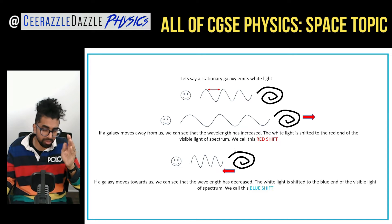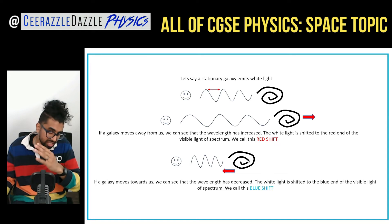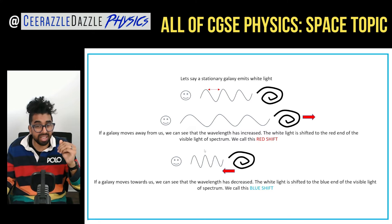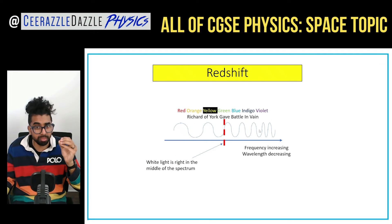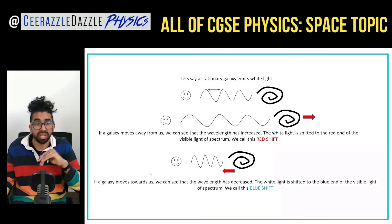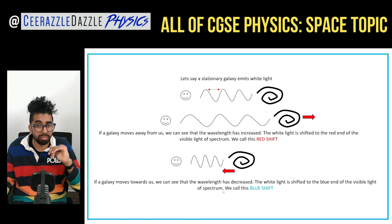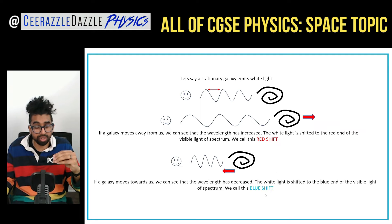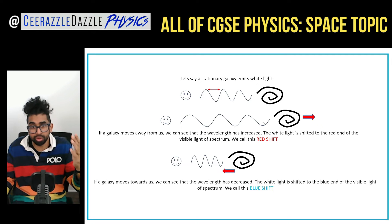What happens if we observe a galaxy moving towards us? The wavelength has decreased. If the wavelength has decreased, the white light will shift to the blue side of the spectrum. So the white light shifts to the blue end of the visible light spectrum — we call this blue shift. Make sure you understand red shift and blue shift in terms of the Doppler effect and how the wavelength changes due to the motion of the galaxy relative to the observer.